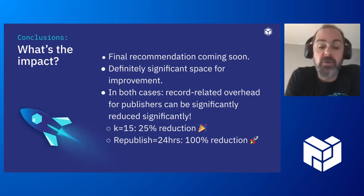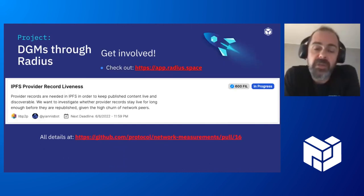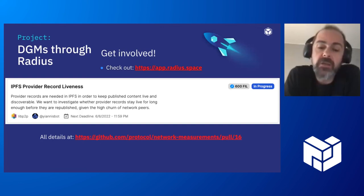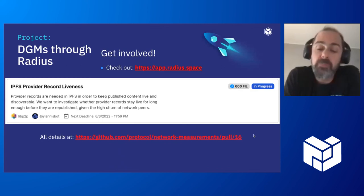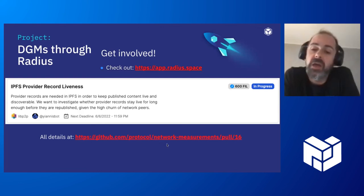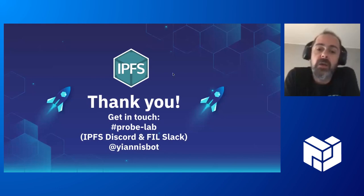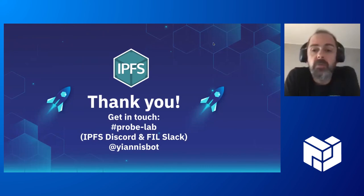We're not aware what percentage of overall energy consumption of servers this represents, but it's definitely a worthwhile reduction. We've been working on this with the team and have more grants on Radius. We have a final report - very extensive, with many more figures and results - available at github.com/protocol/network-measurements, pull request 16, soon to be merged. That's it. You can get in touch - we live in ProbeLab on IPFS Discord and also on Filecoin Slack. Thanks everyone.